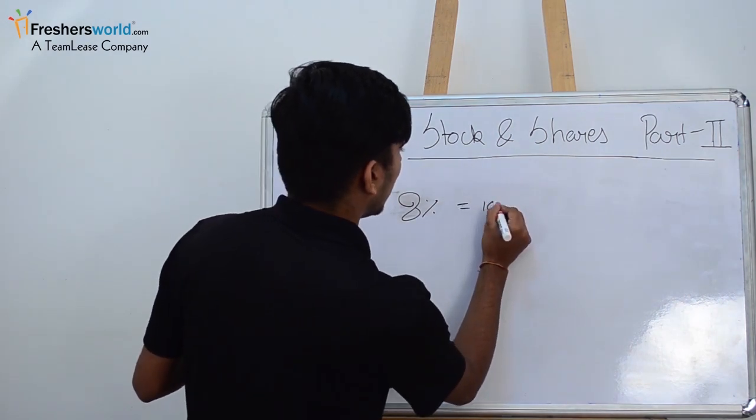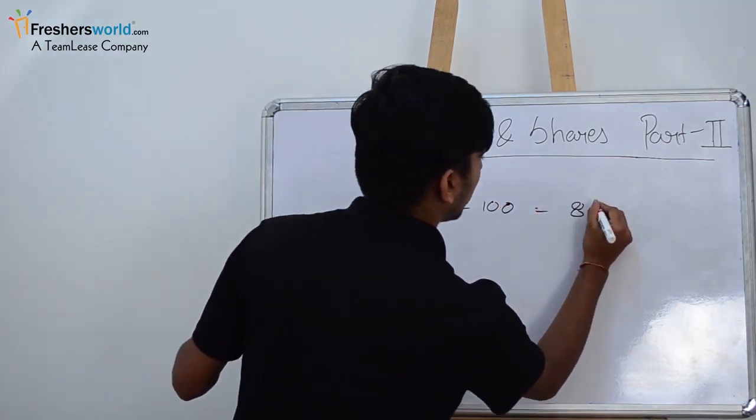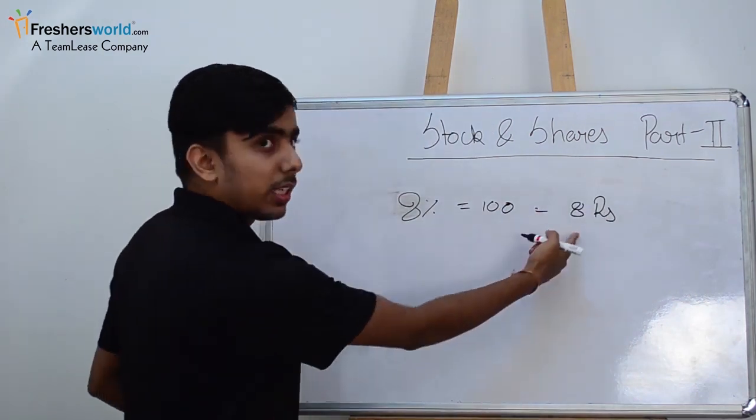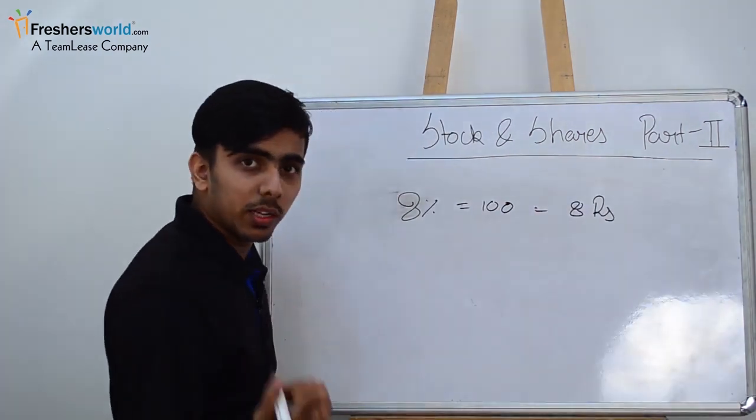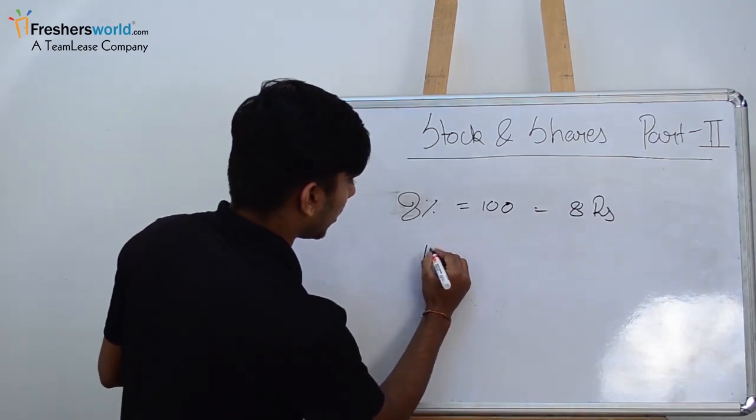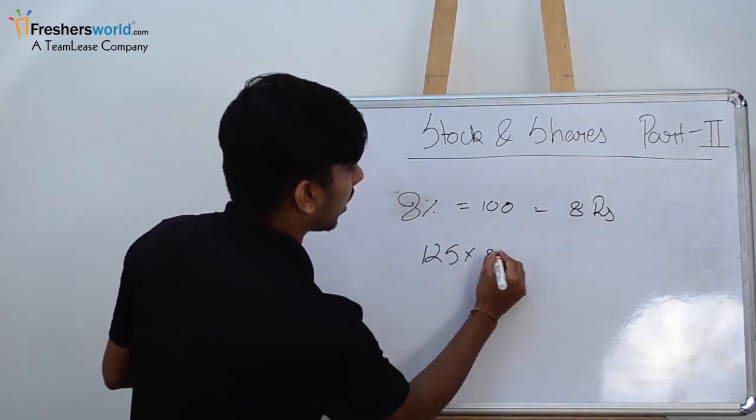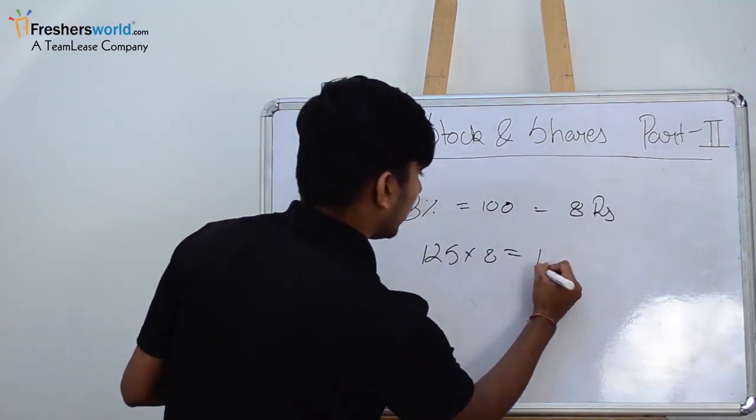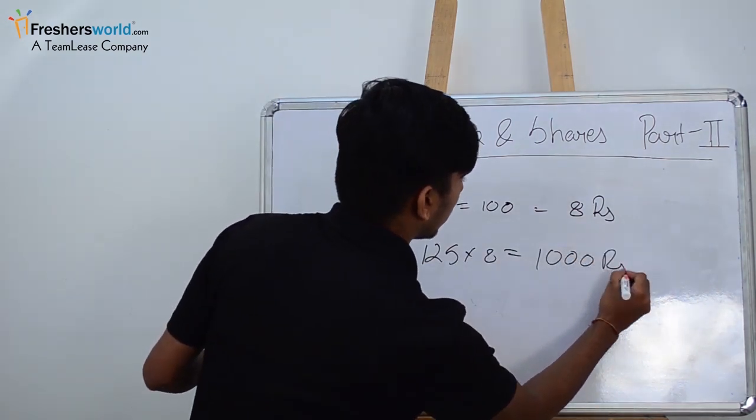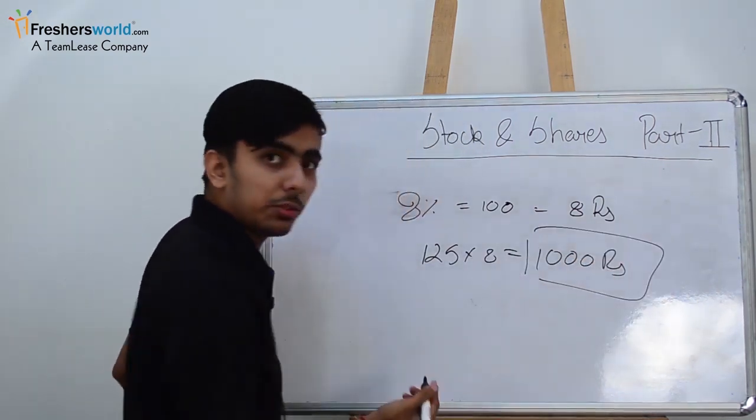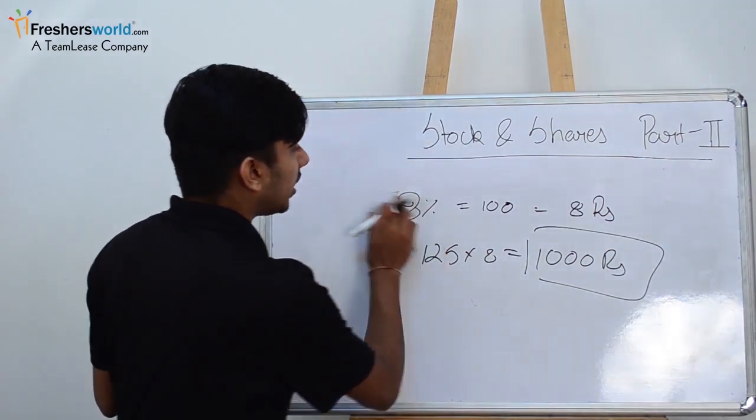If you do 8 percent of 100 rupees, then it will come as 8 rupees. So we will get 8 rupees per share. How many shares we have is 125, so 125 into 8 equals 1000. So we'll get 1000 rupees dividend on these shares.